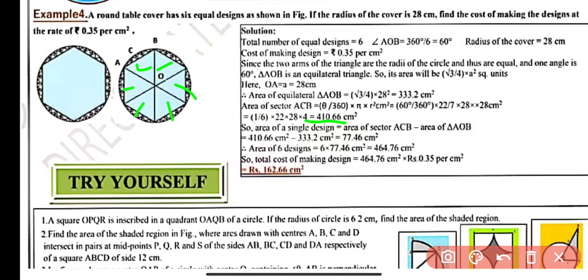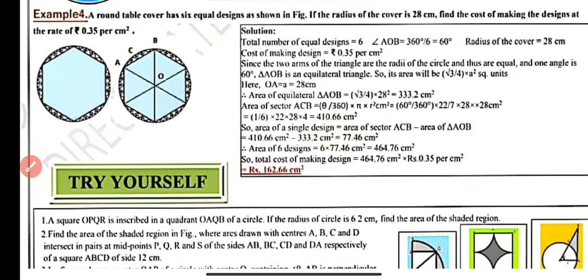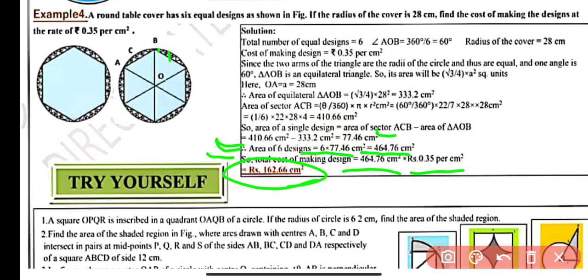Area of single design = Area of sector − Area of triangle = 410.66 − 333.2 = 77.46 cm². Area of six designs = 6 × 77.46 = 464.76 cm². Cost of making the design = 464.76 × 0.35 = ₹162.67 (approximately). This is the cost of the complete design.